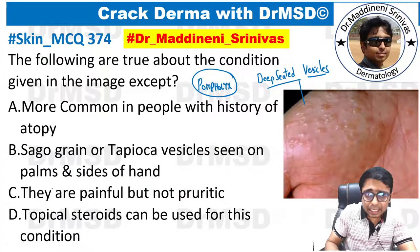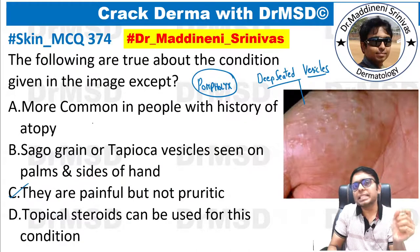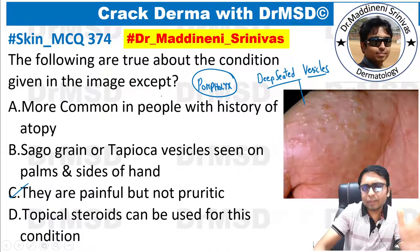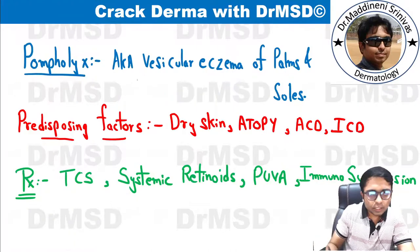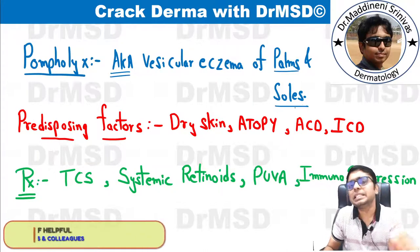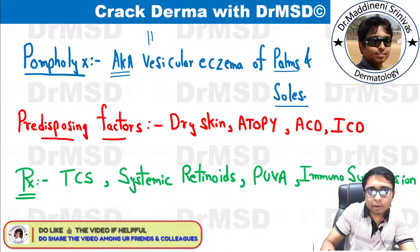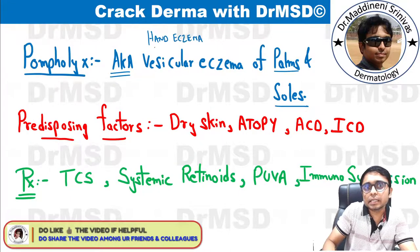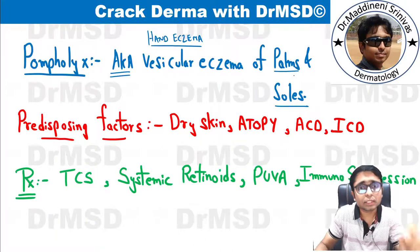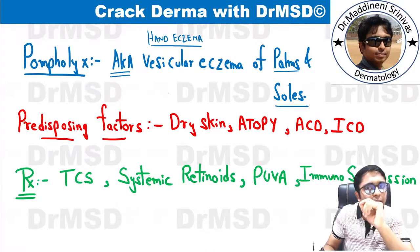Yes, option C is the answer. Let us first understand what pompholyx is. It is also known as vesicular eczema of the palms and soles. It is basically a type of hand eczema. Since there are vesicles present and the lesions are predominantly seen over the palms and soles, it is called vesicular eczema of the palms and soles.